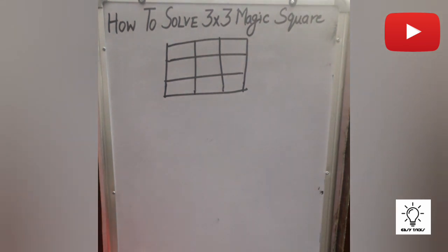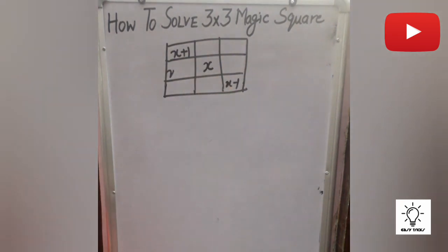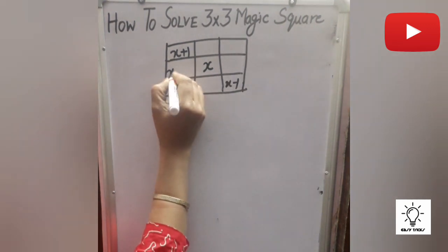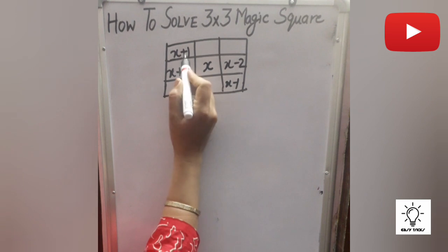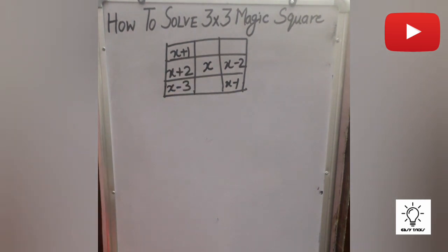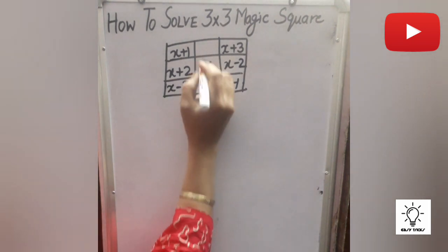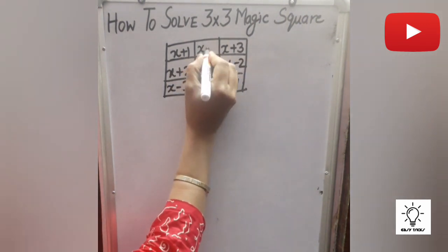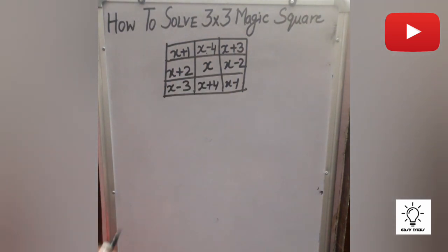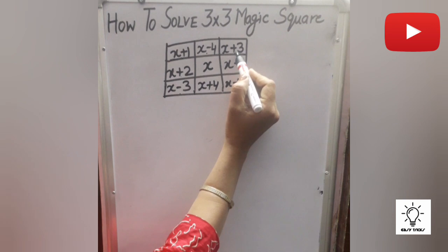I will tell you first the formula for how to solve it. We put the value of x in the center, then x+1 and x-1. Diagonally we write x+1 and x-1, then x+2 and x-2. For the next pair, we take x-3 and x+3. Then x+4 in addition positions. Remember: 2 are in addition, then 1 subtraction, 2 in addition, 1 subtraction, then 2 in subtraction and the third is always in addition.